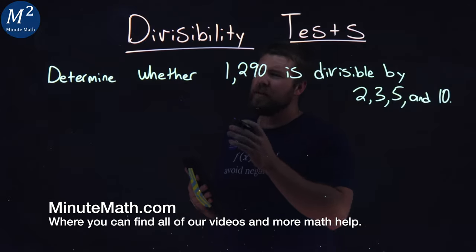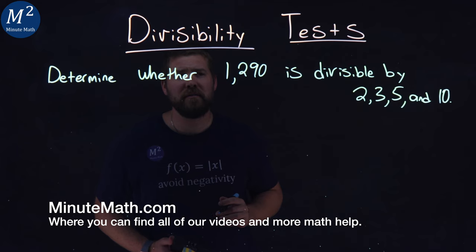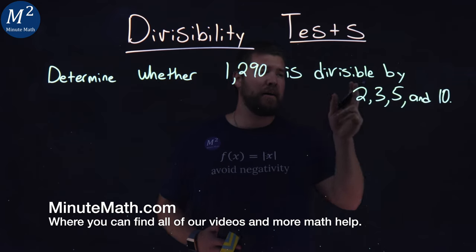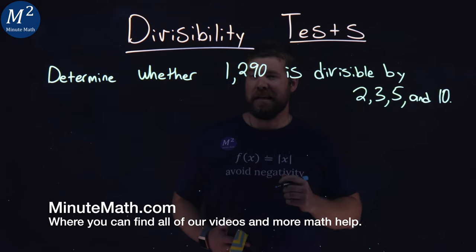We want to determine whether 1,290 is divisible by 2, 3, 5, and 10.